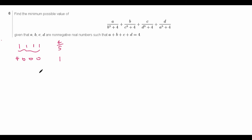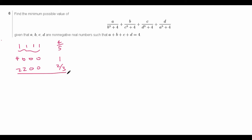But we're not done here. We have to check when two of the variables are 0, and in this case set the other two equal to 2 and 2. If we plug this in, we get 2 over 12 plus 2 over 4, that's 2 thirds. And that's actually smaller than 4 fifths. So we have our new contender for minimum possible value of 2 thirds, with 2, 2, 0, 0.